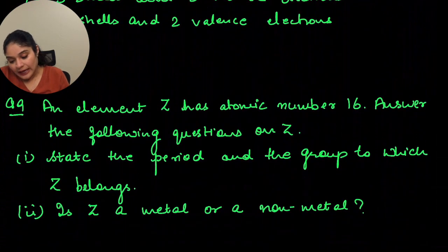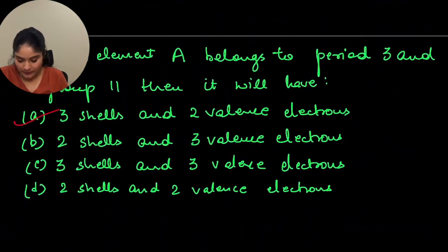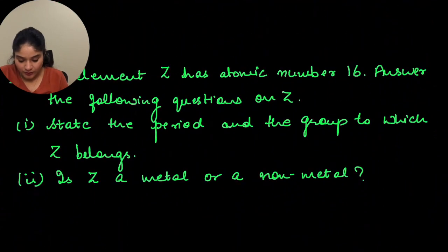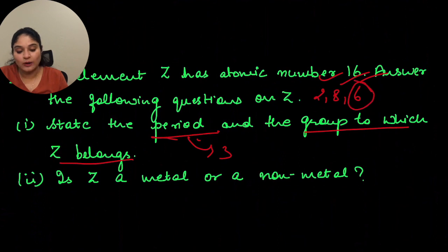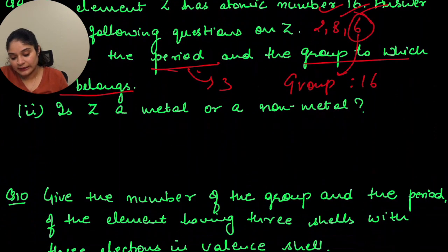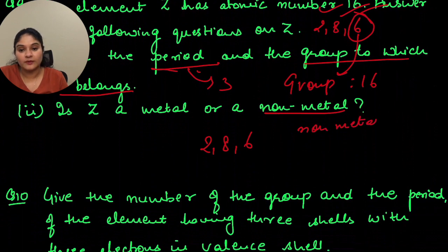An element Z has atomic number 16. The electronic configuration will be 2, 8, 6. The period number will be 3 because the number of shells is 3. The group to which Z belongs: it has 6 valence electrons, so the group will be 16. Is Z a metal or a non-metal? With configuration 2, 8, 6, it can accept electrons, so its nature is of gaining electrons — the answer is non-metal.